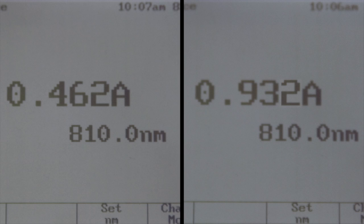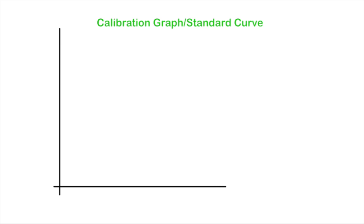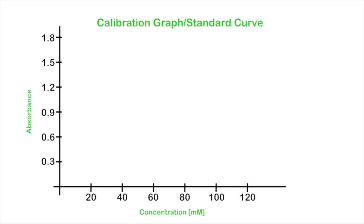Also notice that as the concentration doubles, the absorbance is also approximately doubled. This linear increase in absorbance proportional to concentration is the basis of the Beer-Lambert law. Therefore, if you were to have a range of absorbance values for different known concentrations, you could plot a graph of absorbance against concentration and use this to determine the concentration of an unknown solution by measuring its absorbance.